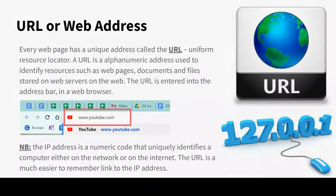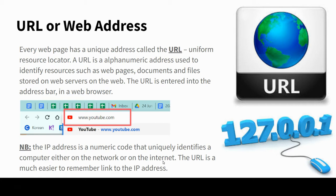URL, or web address, means the same thing. URL stands for Uniform Resource Locator. It is an alphanumeric address used to identify resources such as web pages, documents, and files stored on web servers. A URL is entered into the address bar of a web browser — for example, www.youtube.com. The URL is a much easier-to-remember link to the IP address, which is a numeric code. The web address is the preferred method to remember a website's address.